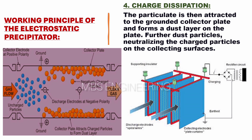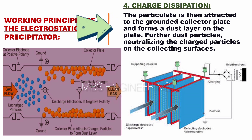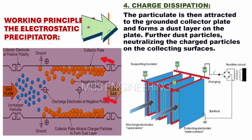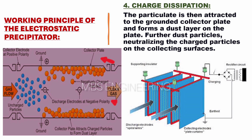The fourth step of the electrostatic precipitator's working principle is charge dissipation. The particulate is attracted to the grounded collector plate and forms a dust layer on the plate. Further dust particles neutralize the charged particles on the collecting surfaces.